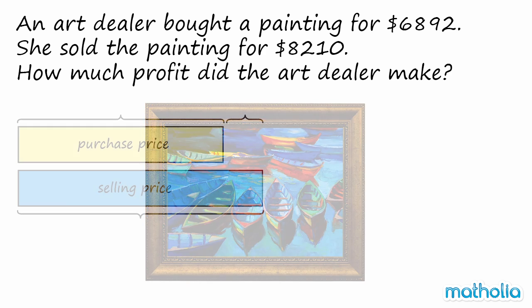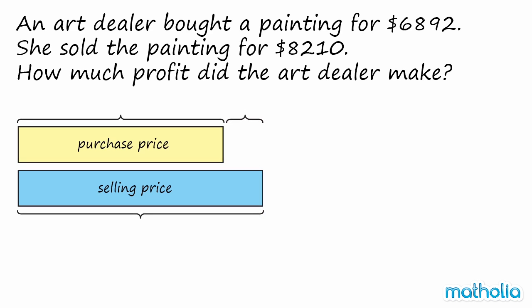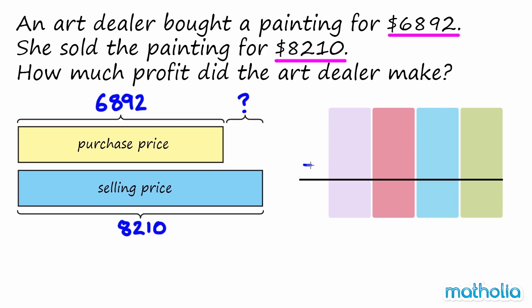Let's use a model to help find the answer. We know that the art dealer bought the painting for $6,892, and we also know that she sold the painting for $8,210. We need to find how much profit she made. The profit is the difference between the selling price and the purchase price, so we must subtract the numbers.